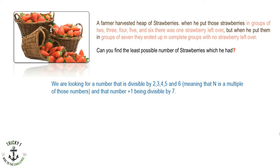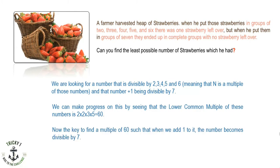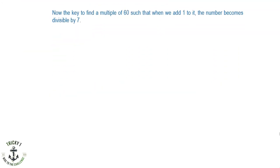This is the exact condition they gave. Let's calculate the LCM of two, three, four, five, and six, which is 60. The key is to find a multiple of 60 such that when we add one to it, the result becomes divisible by seven. We will use trial and error with multiples of 60. So 60 plus one equals 61.